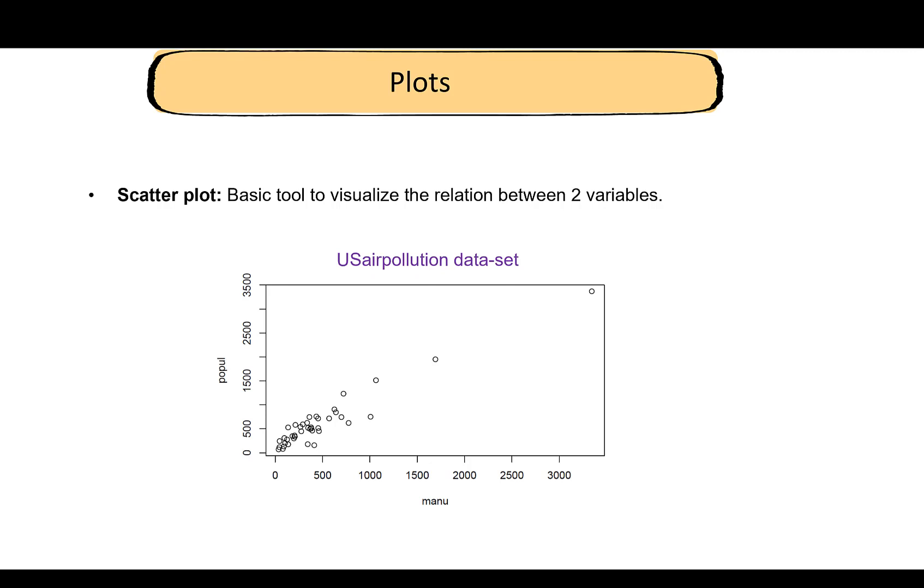On the x-axis we have the number of manufacturing units in the city, on the y-axis we have the city population. This data set is taken from the US air pollution data. It's available in R. In the lab following this video you shall be working on this data set.